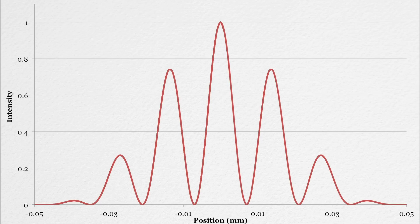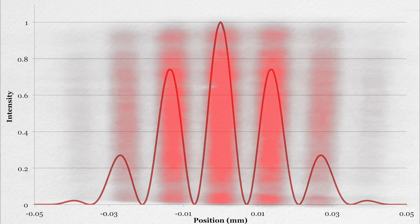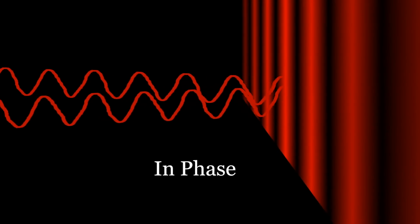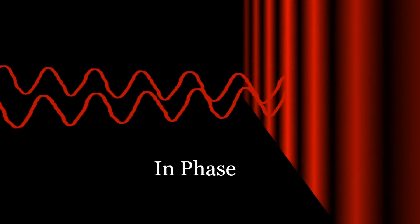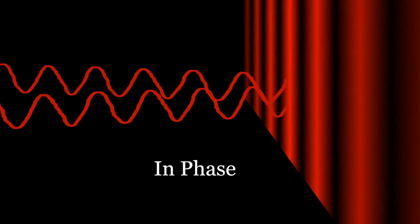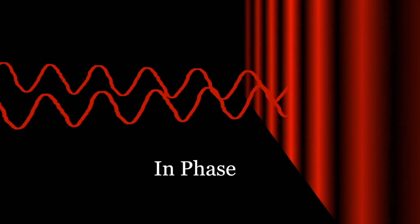This is what a graph of intensity versus position would look like for the interference pattern. What creates that pattern? Consider the bright spot in the middle. The light from each slit has to travel the same distance to reach that point, and hence both waves arrive in phase. That means crests with crests and troughs with troughs. So they add together and create an interference maximum, a bright spot.